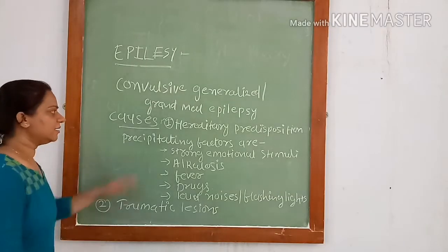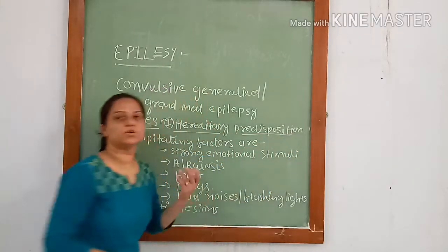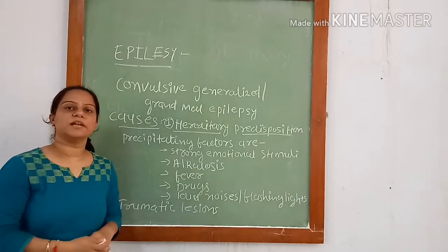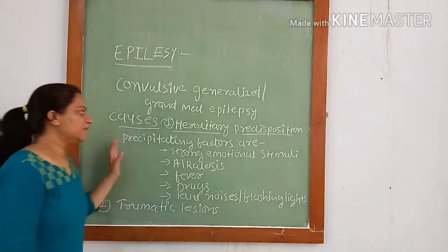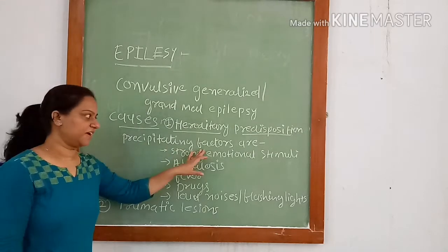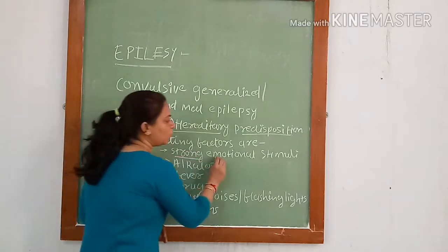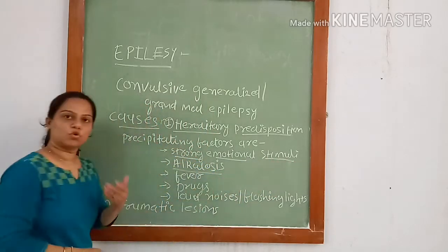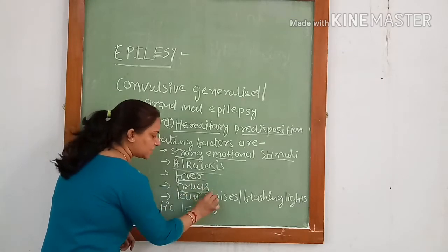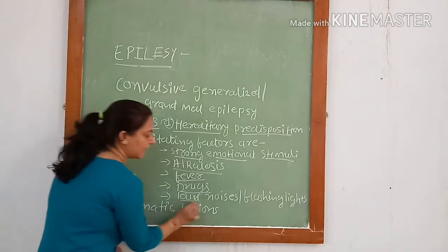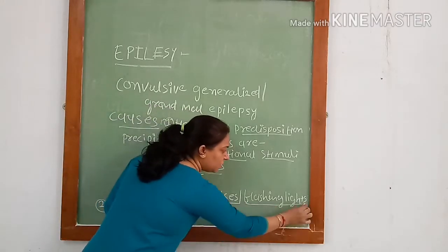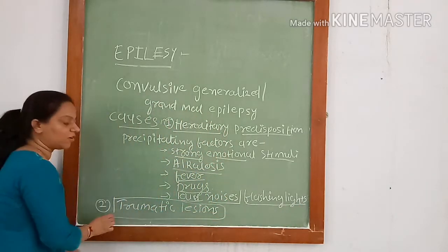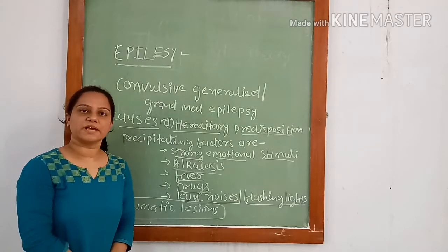Causes include hereditary predisposition to epilepsy. In such people, there is an abnormal epileptogenic circuit which can be activated by a few precipitating factors: light, strong emotional stimuli, alkalosis due to over-breathing, fever, certain drugs, loud noises, or even flashing of lights. Another reason is that a traumatic lesion of the brain can also cause epilepsy.